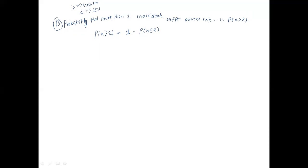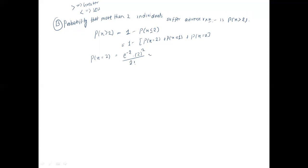Using the PMF formula with lambda = 2: For P(X = 2), we have e to the power minus 2 multiplied by 2 to the power 2, divided by 2 factorial. That is 0.135 multiplied by 4, divided by 2, which equals 0.271. For P(X = 1), we have e to the power minus 2 multiplied by 2 to the power 1, divided by 1 factorial. That is 0.135 multiplied by 2, divided by 1, which also equals 0.271.